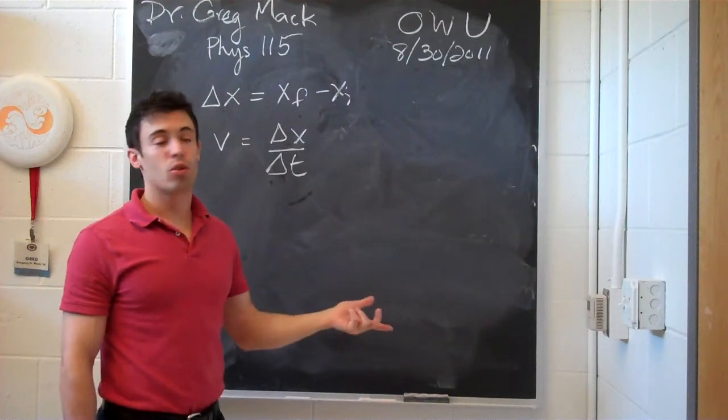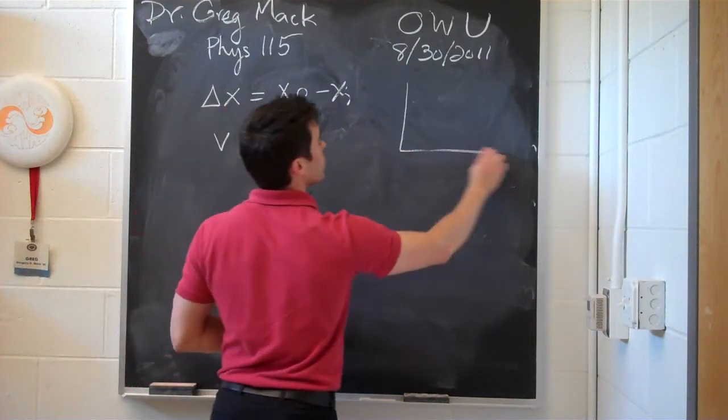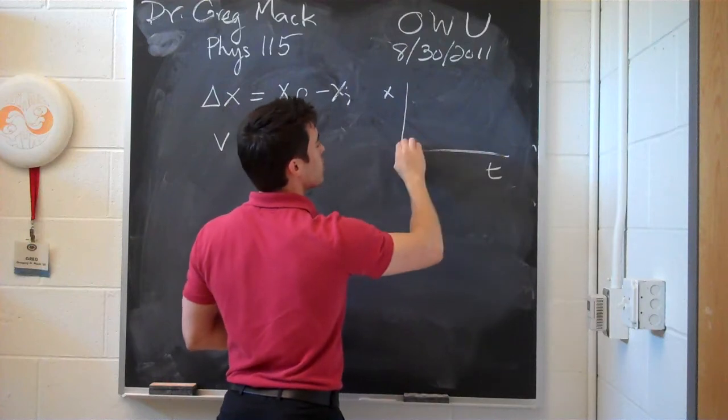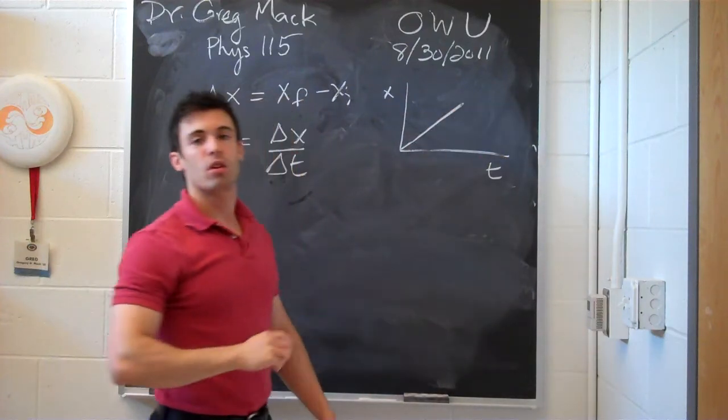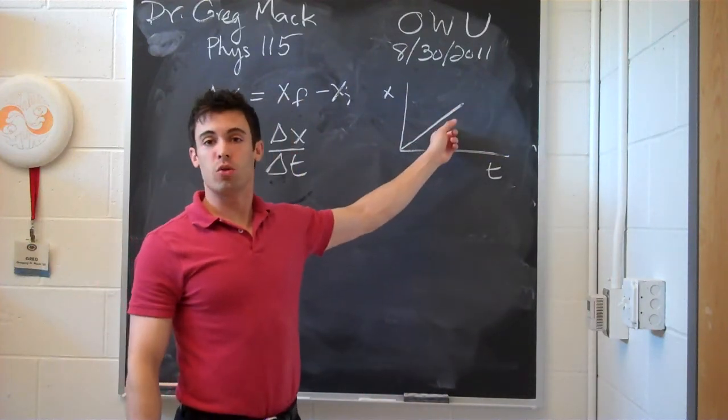So if you're looking at a graph, say, of x versus t, and you have a line, then the slope of this line is going to be your velocity.